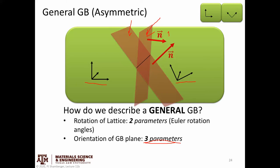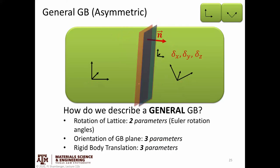One example might be this grain boundary normal up here, or a different example might be this other grain boundary normal — these are parameters needed to describe the orientation of the interface itself. Finally, depending on how the crystal lattice looks on either side, there might be a rigid body translation. I might need to shift the unit cell on the left-hand side a little bit with respect to the lattice on the right. This is especially important in ceramic materials where we care about lattice terminations — the actual exposed atoms at the interface could be different based on this rigid body translation.